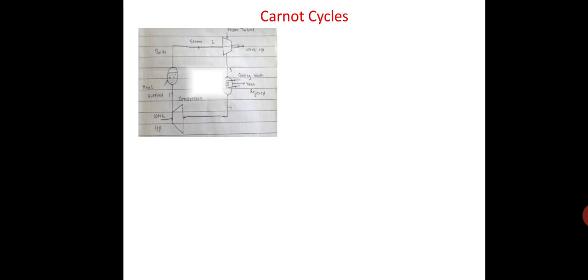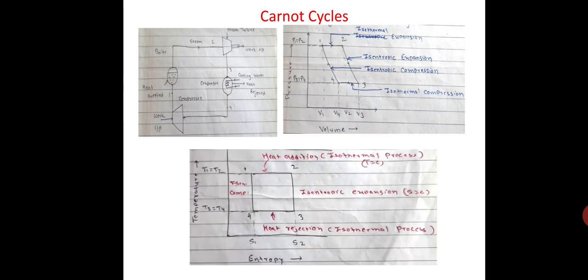The figure shows the Carnot engine. Carnot cycle on PV diagram in the second figure, and Carnot cycle on TS diagram in figure 3. It consists of two constant pressure operations, 1 to 2 and 3 to 4, and two frictionless adiabatic operations, 2 to 3 and 4 to 1. These operations are discussed below.